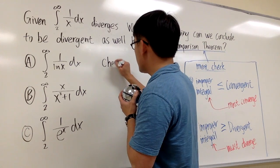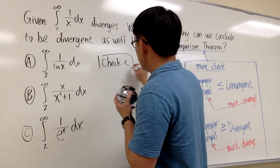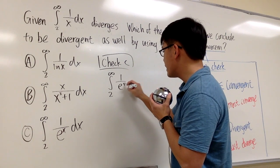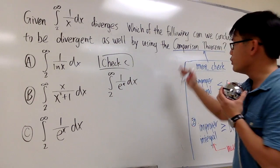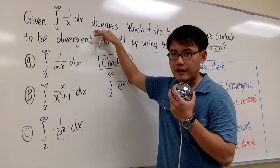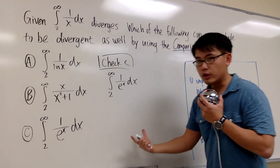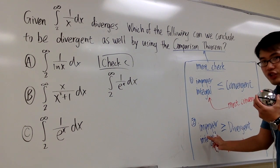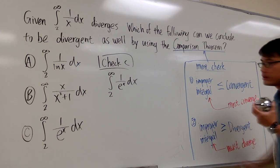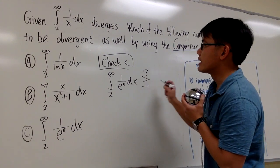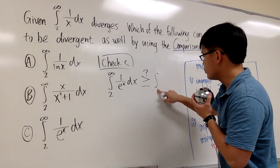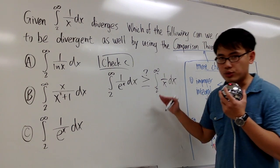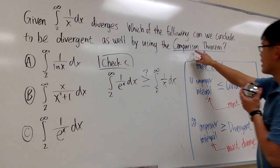Let me run through the check, starting with choice C. I'll write down the improper integral from 2 to infinity of 1/eˣ dx. For the comparison theorem using a divergent integral, we need to check if this is greater than or equal to the divergent integral from 2 to infinity of 1/x dx. That is the only situation where we can draw a conclusion.